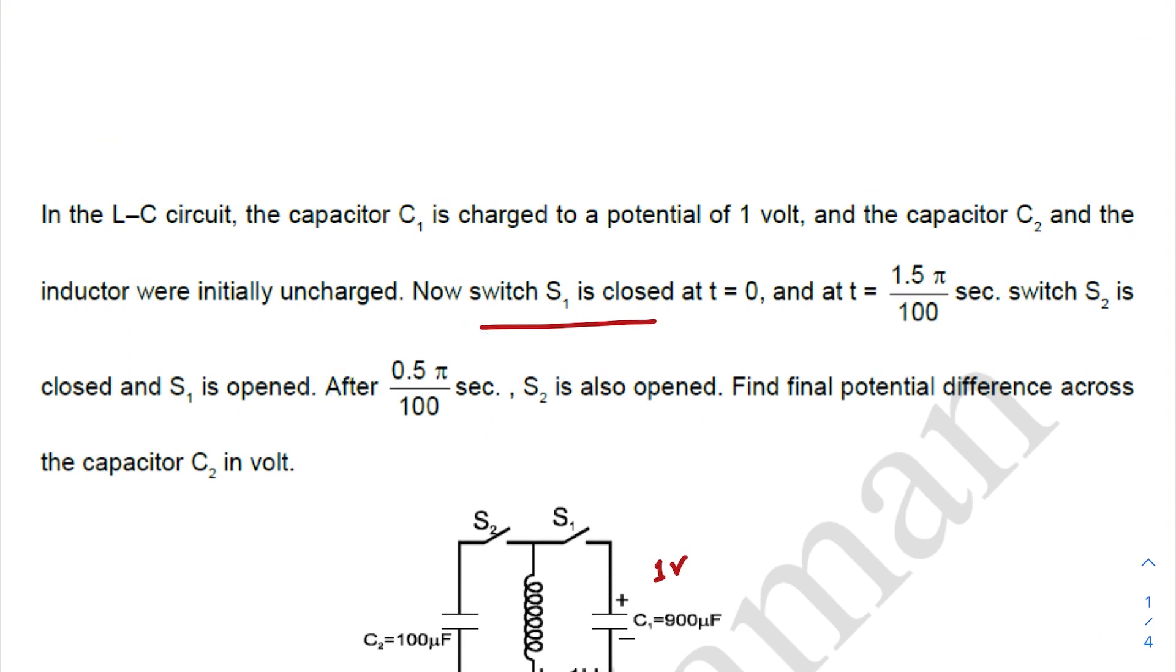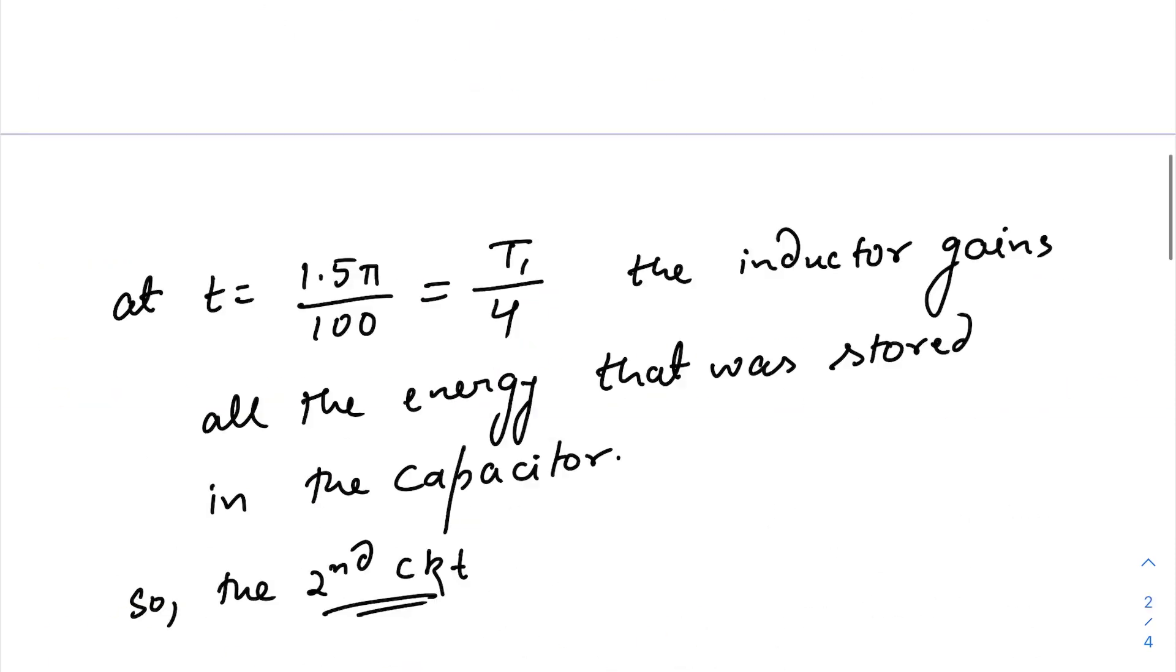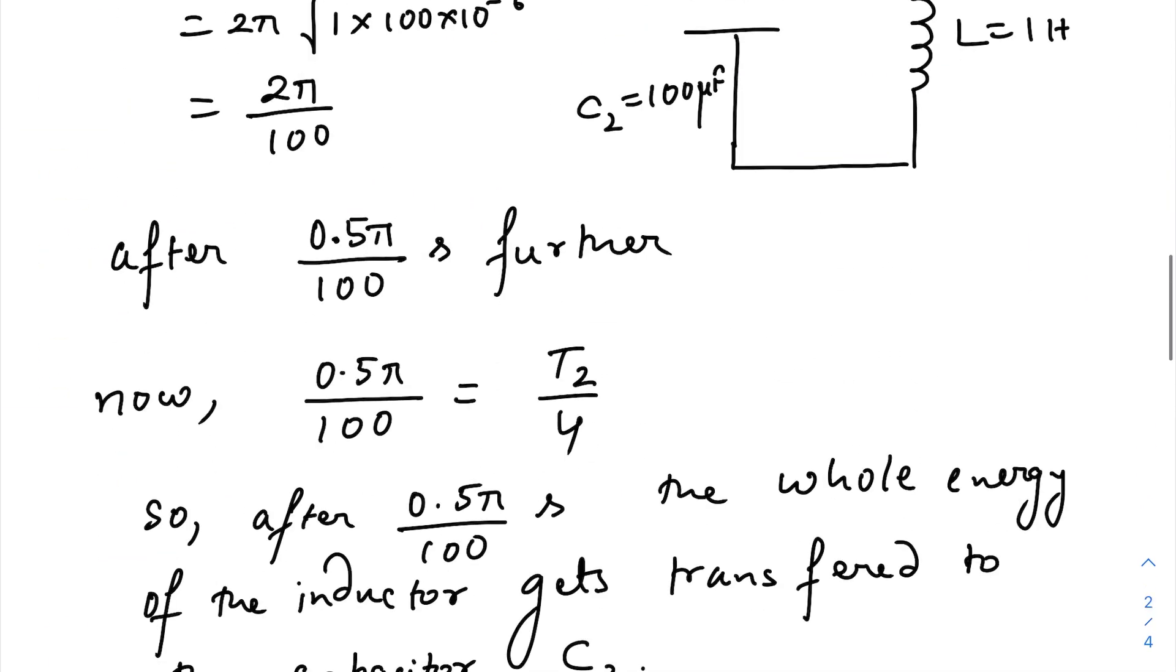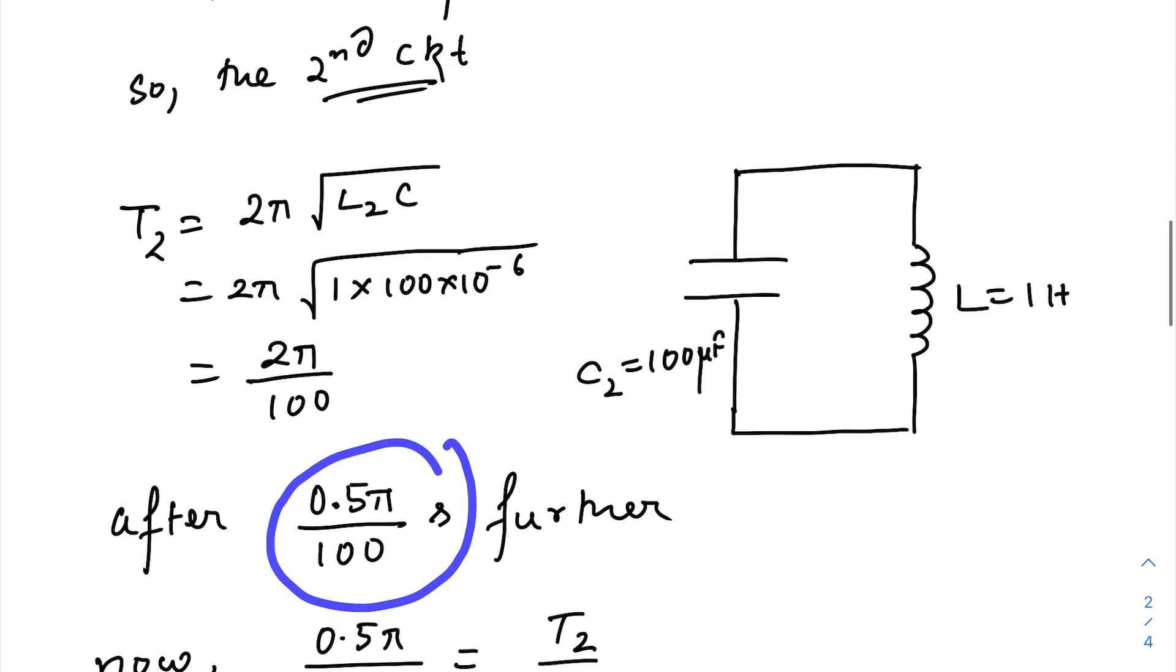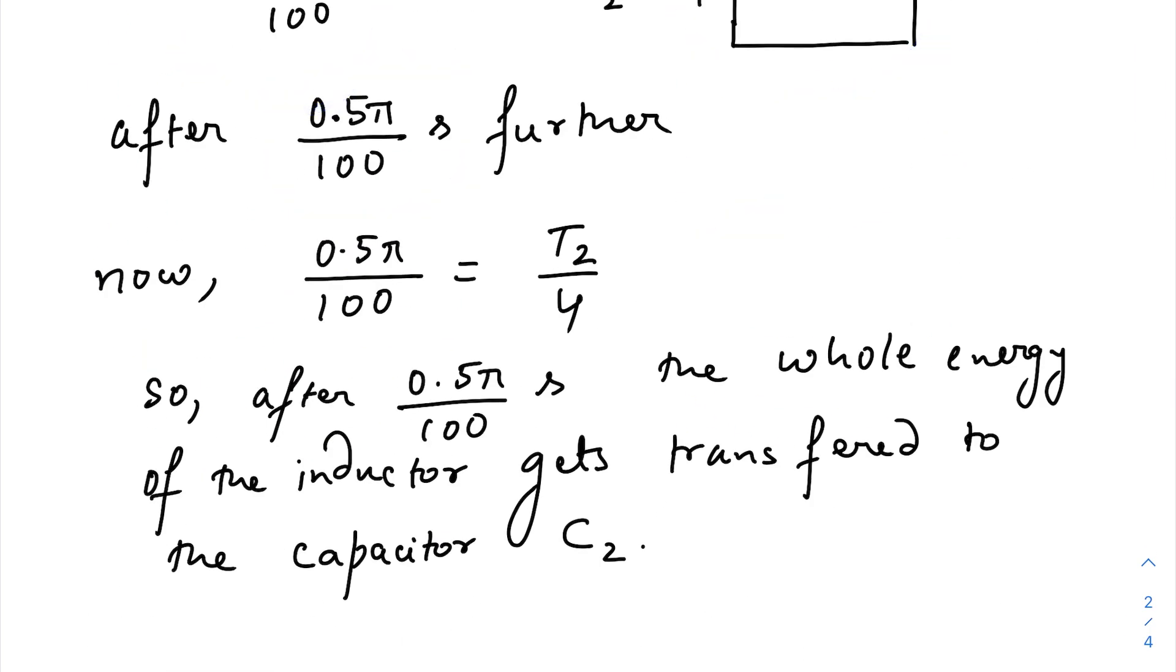And if you watch the question carefully, after 0.5π/100 second, I mean after turning on switch S2, and later 0.5π/100 seconds later, switch S2 is also opened, right? So 0.5π/100 second means one-fourth of the time period of this second LC circuit, right?